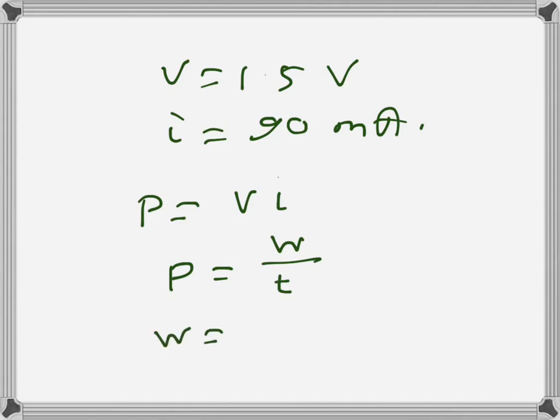So we have 1.5 times 90 times 10 to the power minus 3, and then times again 12 times 3600.